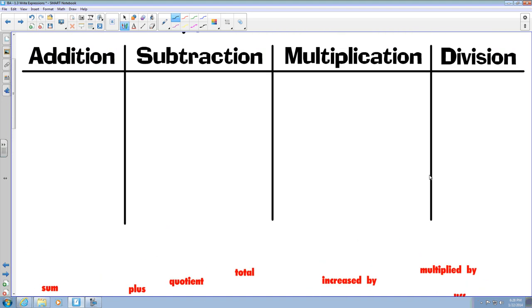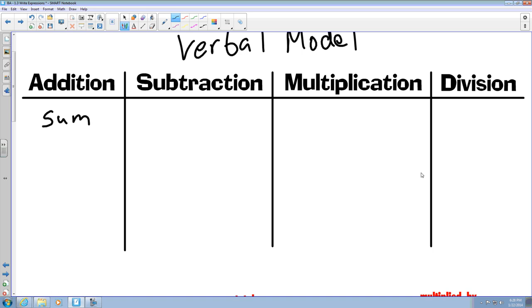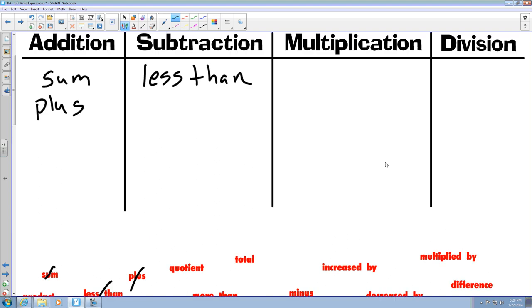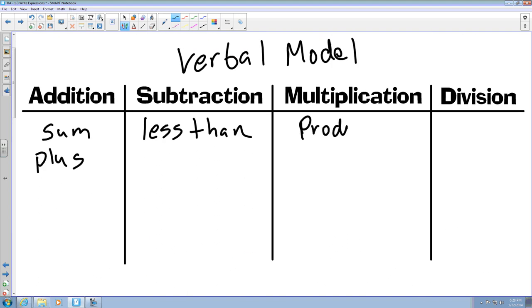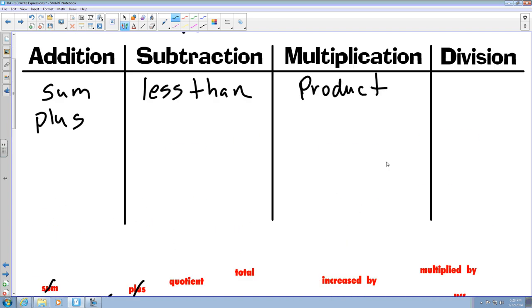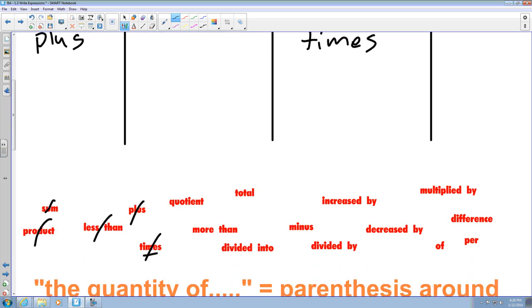So if I look at sum, sum is addition, so I would put sum in addition. Mix that out. If I look at less than, less than is with subtraction. Cross that out. Plus, that would be under addition. Product, product would be under multiplication. And cross that out. Times would also be under multiplication.